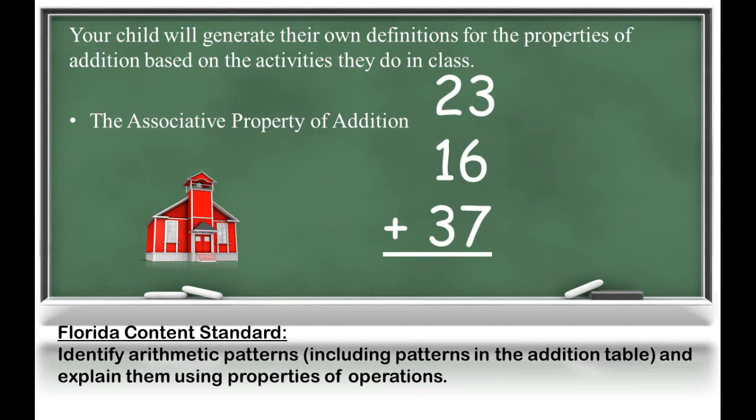When looking at the associative property, combining 23 plus 37, mentally I could find 60, grouping the 23 and 37 together. I then can add my 16. 60 plus 16 gives me 76.